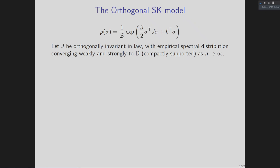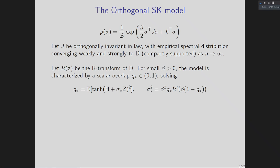The model I'll actually talk about for the spin glass context is the orthogonal SK model. It looks the same as the previous SK model, except that rather than assuming entries of J are IID Gaussian, I consider a couplings matrix J that is orthogonally invariant in law. This means the eigenvectors of J are Haar-uniformly distributed on the orthogonal group, independently of the eigenvalues. Asymptotically, as N goes to infinity, I assume the empirical spectral distribution of J converges weakly and strongly to a compactly supported limit law D — by strongly I mean the endpoints of support converge to the endpoints of the limit law.